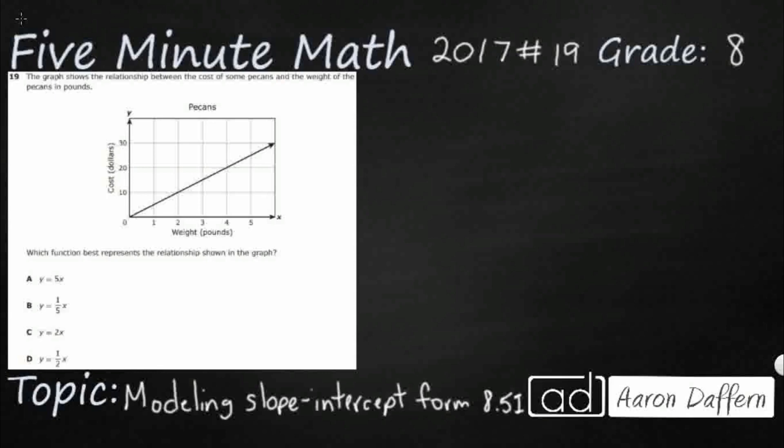So we have a graph here that shows the relationship between the weight of pecans and how much it costs to buy those pecans, which makes sense right - as your weight increases then your cost is going to increase. And so we simply just need to find the function here that best represents the relationship in this graph.